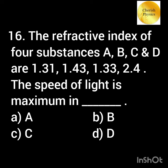The refractive index of four substances A, B, C and D are 1.31, 1.43, 1.33, and 2.4. The speed of light is maximum in?